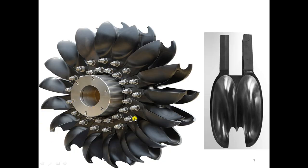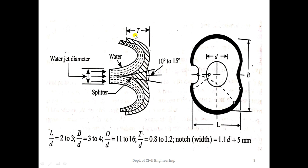This is the rotor to which double hemispherical or double ellipsoidal buckets have been fixed. This is the sectional view of the bucket, where you can see the splitter. The jet coming out of the nozzle hits the splitter symmetrically and gets distributed into two halves as shown in the figure. The bucket centreline cannot be made exactly as a mathematical cusp because the jet invariably carries particles of sand and other materials which tend to wear it down.